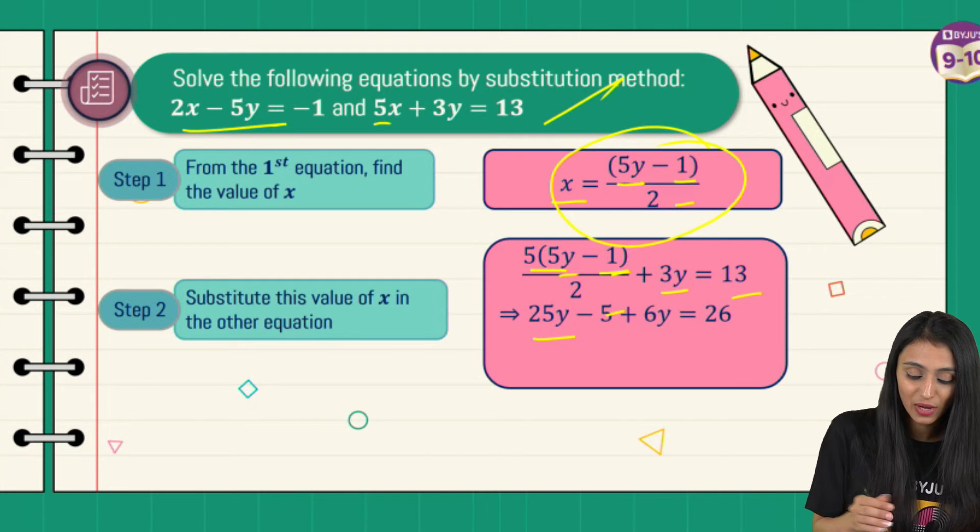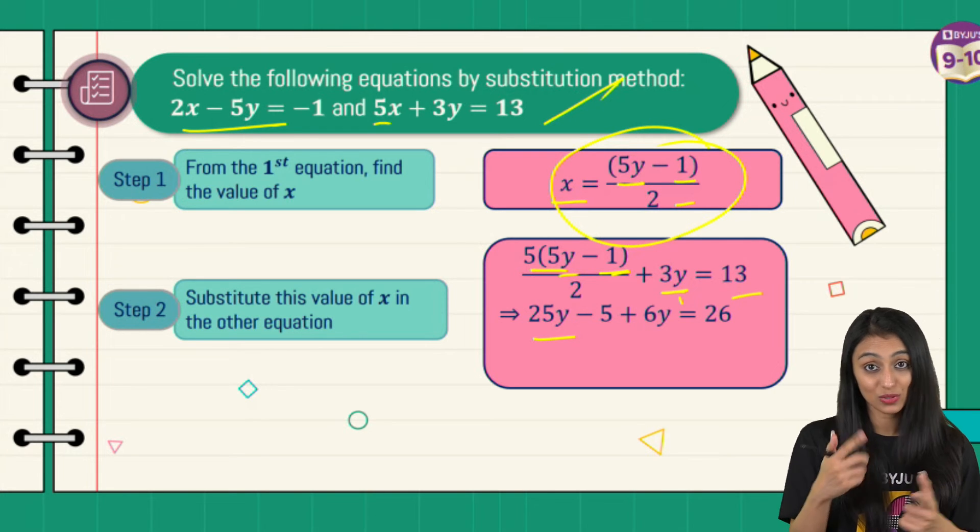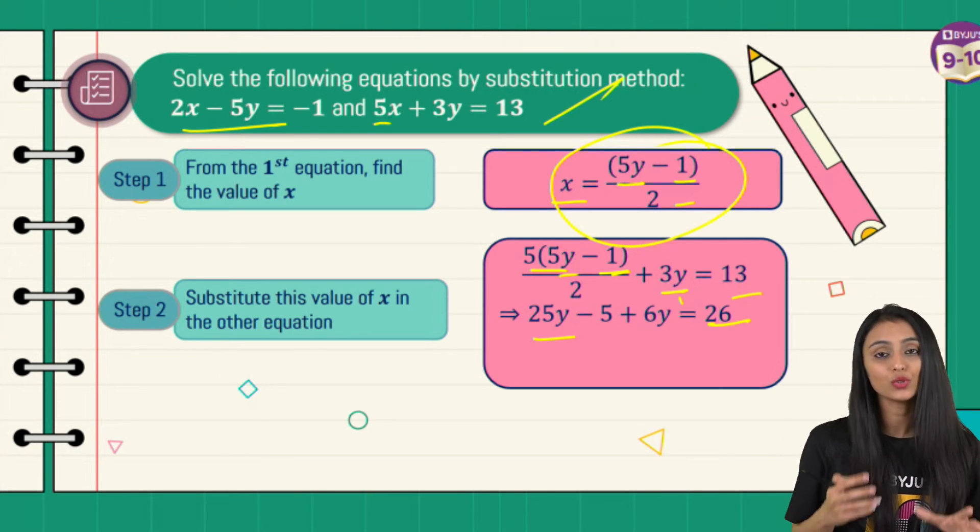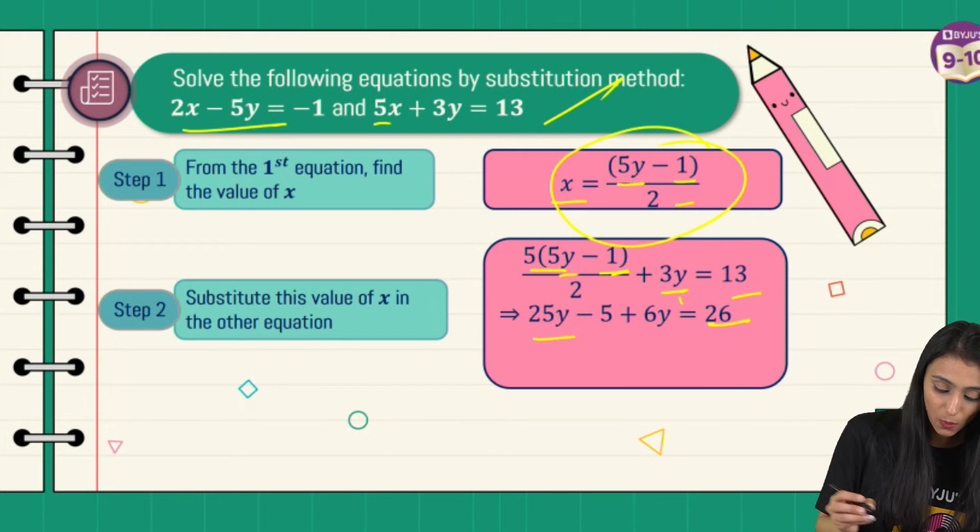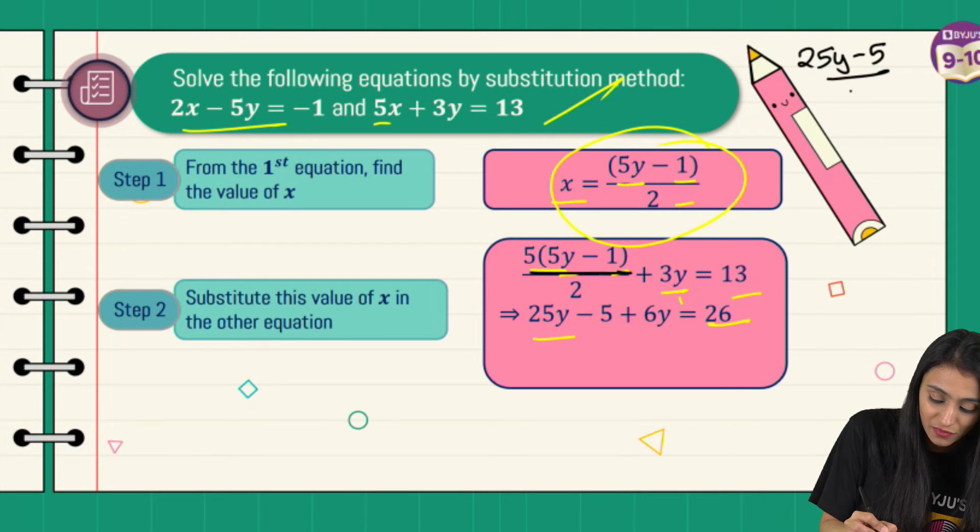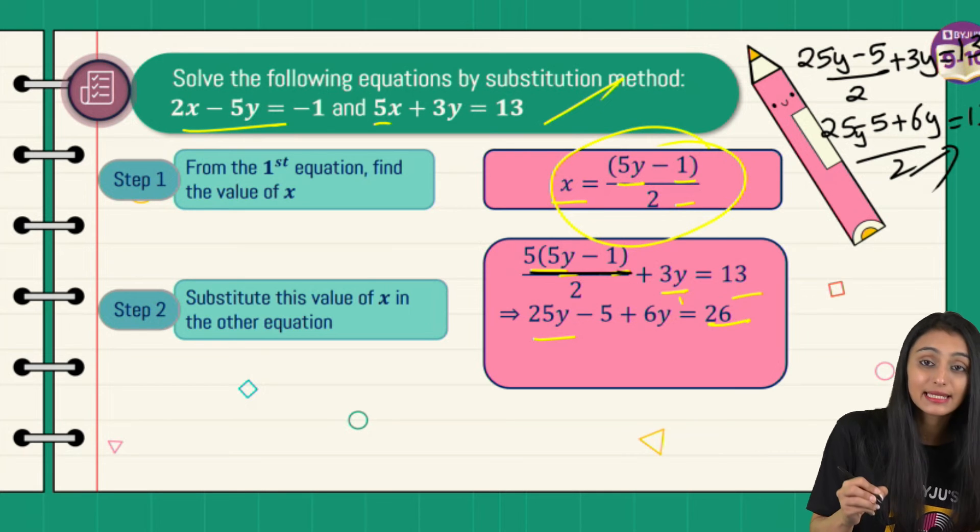Now to simplify this, I'm going to multiply 5 inside. So what do I get here? 25y minus 5 plus 6y, because we are taking LCM as well simultaneously, equals 26 if you take 2 to the other side. Let me show you the step how we are arriving at this. Once I multiply, I get 25y minus 5 by 2 plus 3y equals 13. That's going to be (25y minus 5 plus 6y) by 2 equals 13. Let's take this 2 to the other side and you will arrive at this equation.